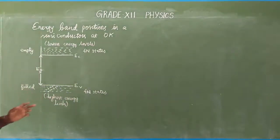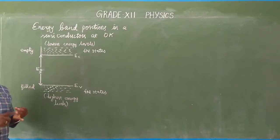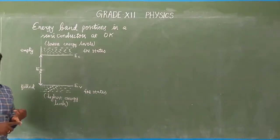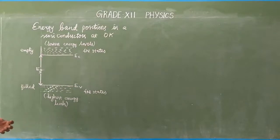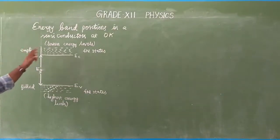Last class we saw how materials are classified into three types based on the number of electrons: conductors, insulators, and semiconductors. We also studied the various types of bands — valence band, conduction band, and energy gap. Based on the electrons in particular bands, the mobility also differs. Now we are going to study about the energy bands in a semiconductor.